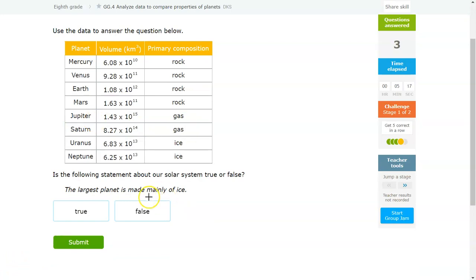So this question, before I move on to stage 2, it's asking whether the largest planet is made of ice. So the largest planet needs to be the one with the greatest volume. So 10, 11, 12, 11, 15, 14, 13, 13. So this one has the greatest volume. So based on information, you should be able to figure out whether this statement is true or false.